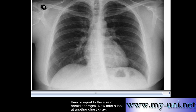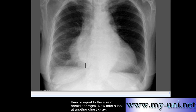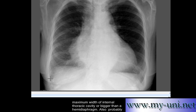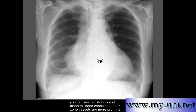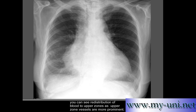Now take a look at another chest x-ray. You can quickly see the cardiac shadow is enlarged, more than half of the size of the internal diameter of the thoracic cavity. You can also see redistribution of blood to the upper zones — the upper zone vessels are more prominent than lower zone vessels — as well as a prominent horizontal fissure, or minor fissure.